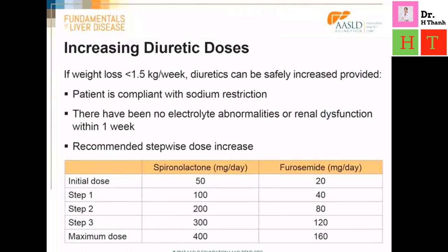The usual starting dose of diuretic therapy is one tablet of a distal diuretic together with one tablet of a loop diuretic. Some patients may not respond to the initial low doses. If the weight loss is less than 1.5 kg per week, the diuretics can be safely increased, provided there have been no electrolyte abnormalities or renal dysfunction within the week and the patient has been compliant with sodium restriction. The recommended increases consist of adding one pill of each class each time until maximal diuretic doses are reached. The maximal dose for spironolactone is 400 mg per day and for furosemide is 160 mg per day.